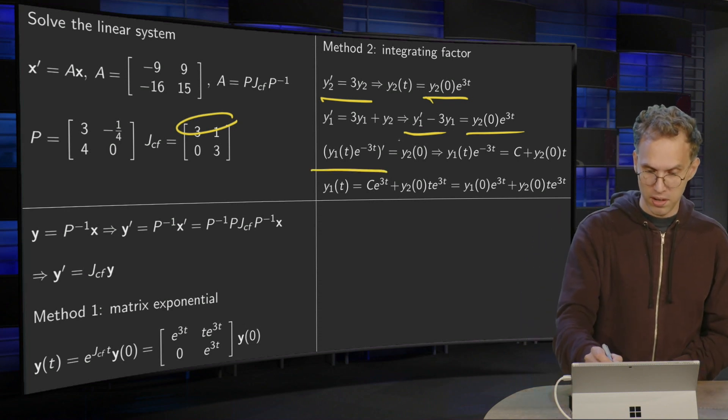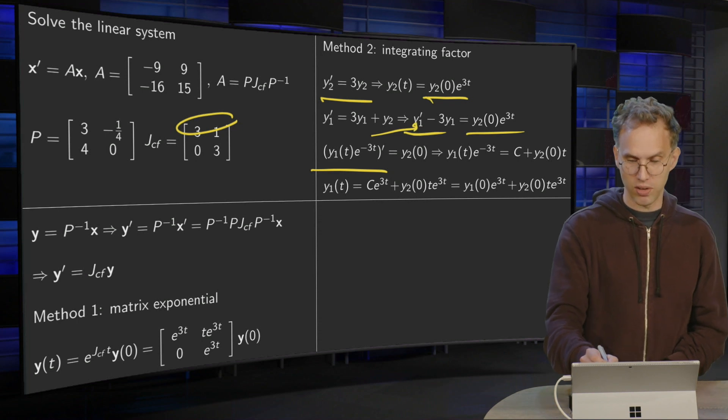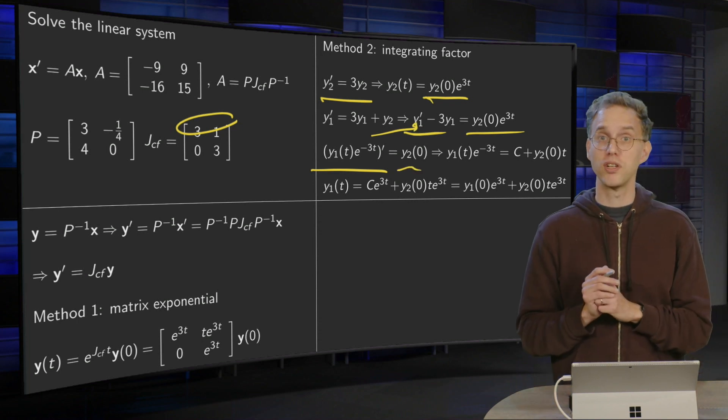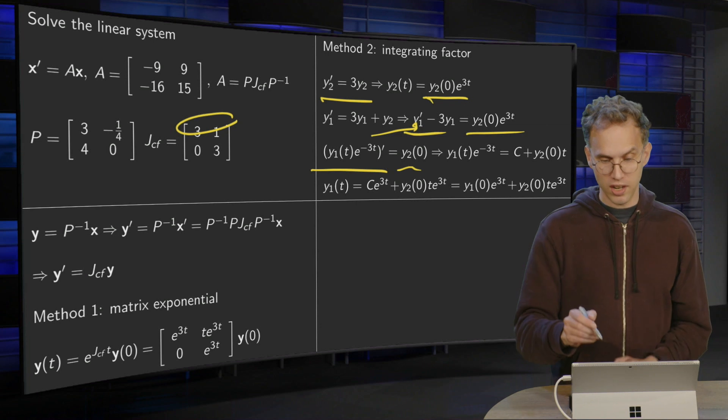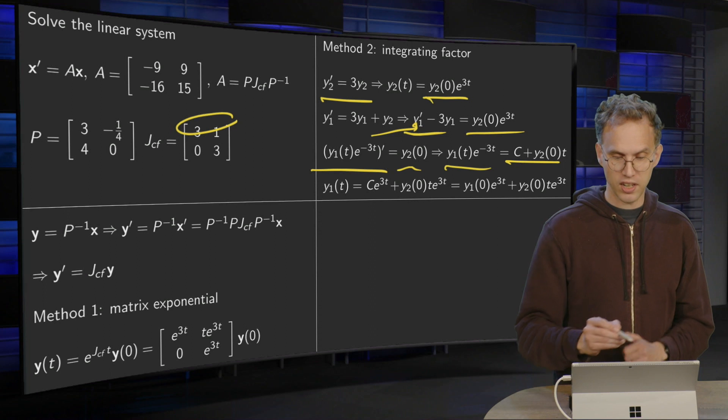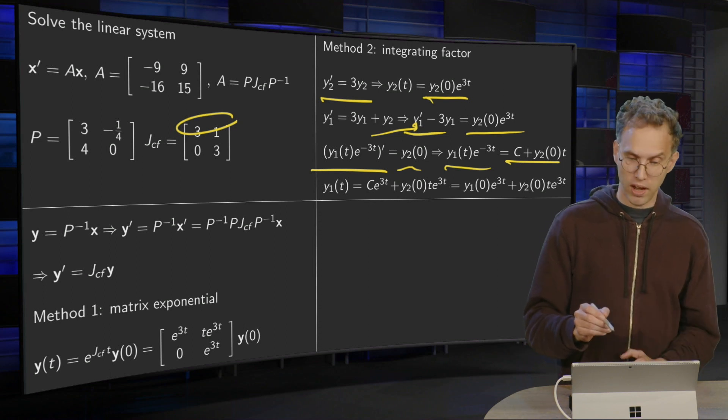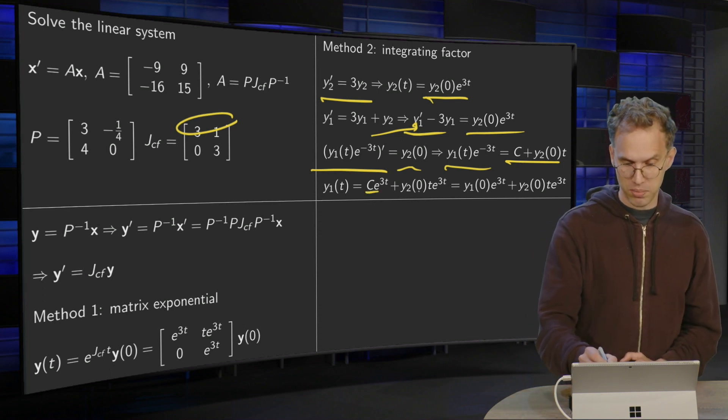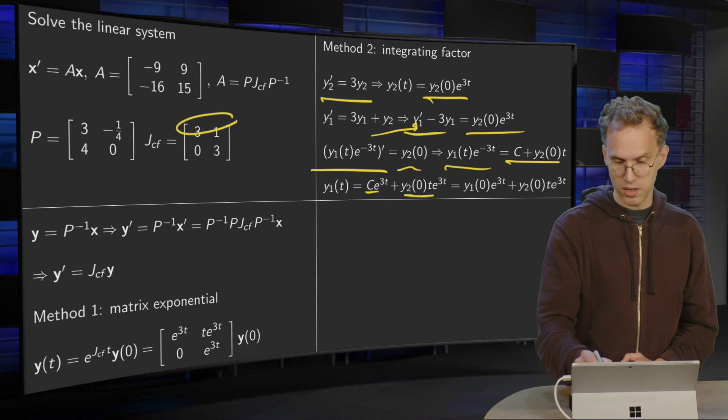Then its derivative yields the left-hand side. And on the right-hand side, you just end up with y2(0). Now you can integrate, y1 times e to the power of minus 3t equals some constant plus integrate the right-hand side. So you have your y1 is some constant times e to the power of 3t plus this part.